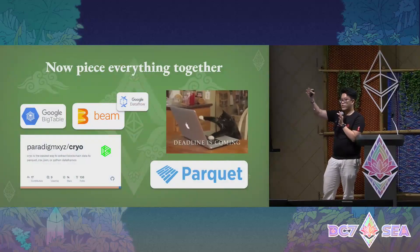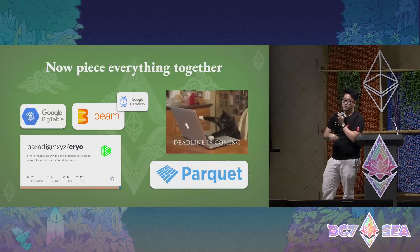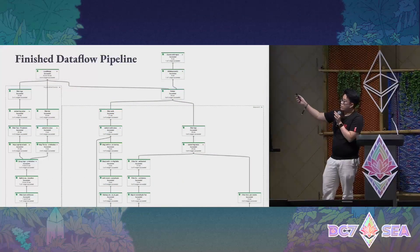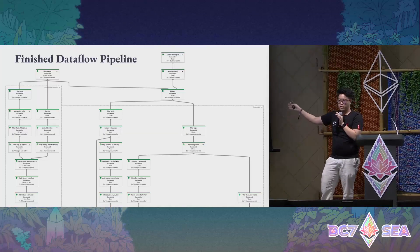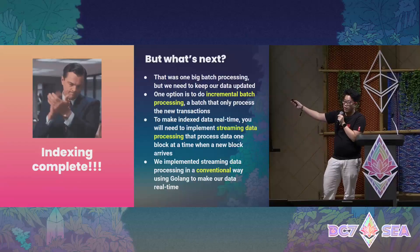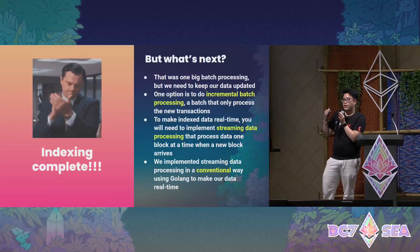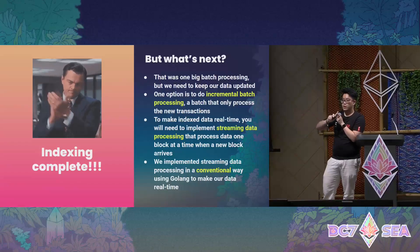Now, piecing everything together and doing some coding — this does not take 10 hours. The coding took me about two to three weeks to work on all the components, understand how Apache Beam works, and actually write it. This is what the final pipeline looks like: data comes from the top, trickles down, and you get the result. We waited around 10 hours and it finished. It took about 10 hours to index all the Ethereum transactions and all the ERC20 token transfers.